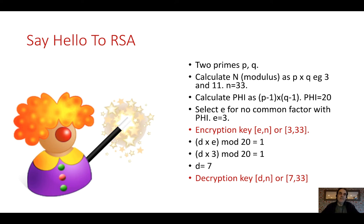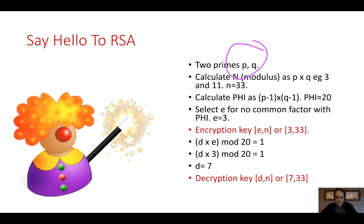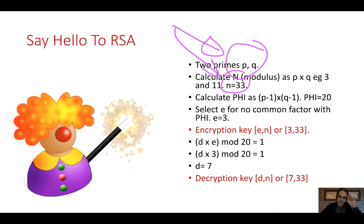Before we start, let's look at some basic principles. One of the core things in internet security is RSA — the public key asymmetric encryption method. For that, we have two prime numbers, P and Q, which are normally quite large. If we take the values of 3 and 11, we get N, our modulus, of 33. If it's possible to factorise this number into the prime numbers, then we've really cracked RSA.